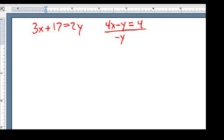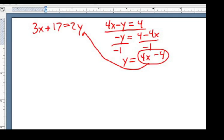I am going to subtract 4x from each side. And then I'm going to divide each side by a negative 1, which changes the sign on everything. And y equals 4x minus 4. I'm going to substitute that value in this first equation here.